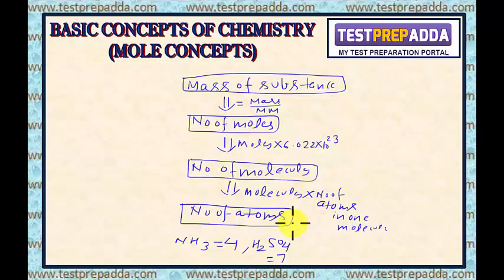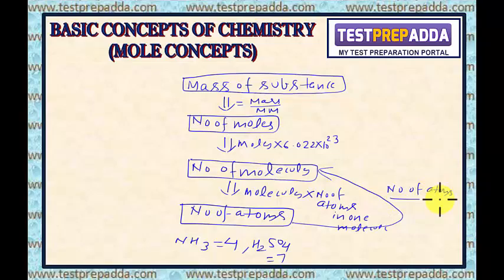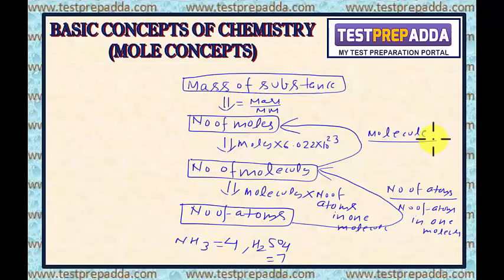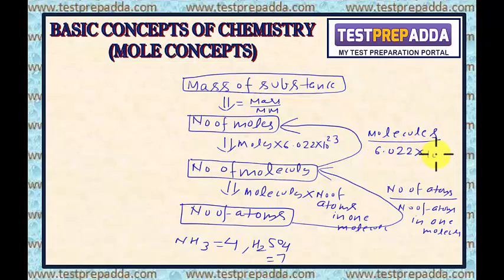In many cases, number of atoms will be given and they ask for number of molecules — just divide by the number of atoms per molecule (4 or 7, etc.). If molecules are given and number of moles is asked, divide by Avogadro's number. To convert moles into mass, multiply moles by the molar mass.